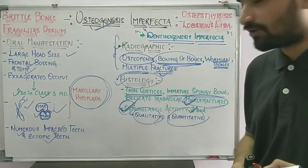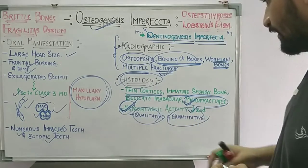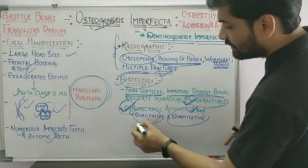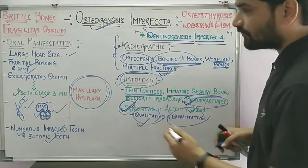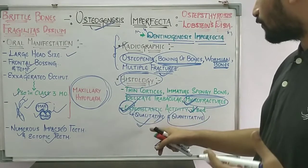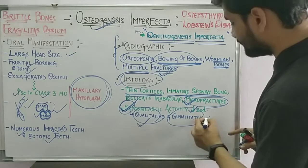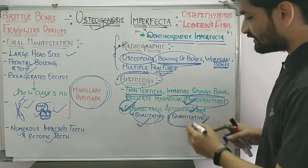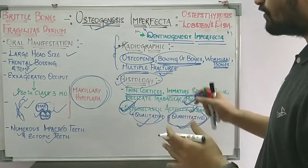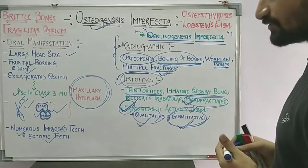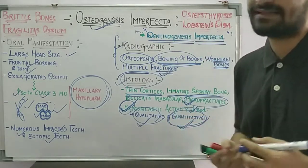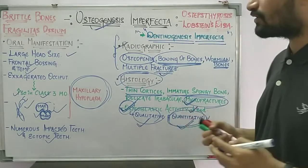Overall, osteoblastic activity is decreased, leading to both qualitative and quantitative defects. Qualitative defects refer to the quality of bone — it is porous and not in a properly matured state. Quantitatively, there is decreased deposition of bone. Together, these defects result in the condition of osteogenesis imperfecta.